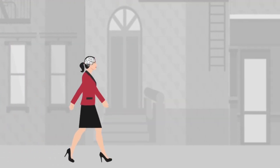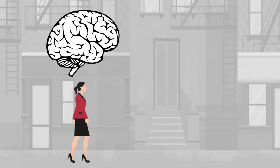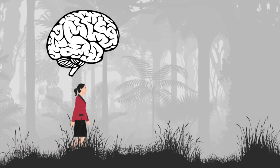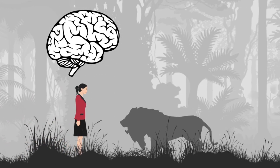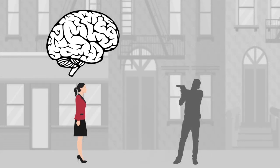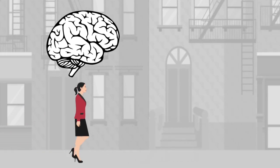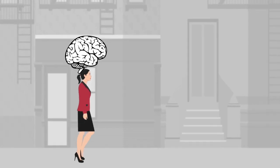Our brains are designed to solve problems related to survival and reproduction in our ancestral environments, which existed thousands of years ago. In some cases the problems our ancestors were solving during the time of human brain evolution are the same ones we're solving today, but sometimes those problems no longer exist — yet the preferences, the motivations, the behaviors are still with us.